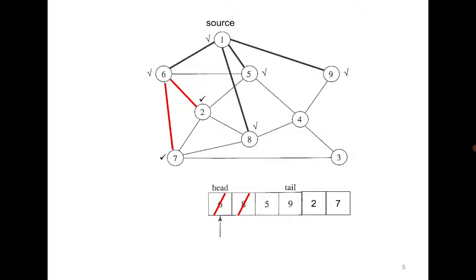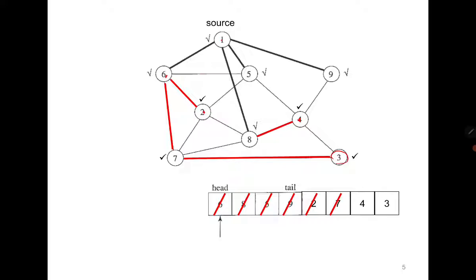Next is vertex 8. You can see that 8 has neighbor 4, so we go to 4. Now vertex 5 — all its neighbors (4, 2, 6, and 1) were already in the queue, so we move to the next one, which is 9. For 9, again all neighbors have been visited. We then go to 2, then 7. For vertex 7, neighbor 3 has not been visited, so we add 3 to the queue. Now for vertices 4 and 3, all neighbors have been visited.